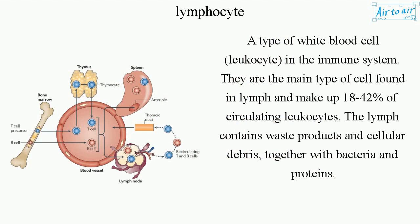They are the main type of cell found in lymph and make up 18-42% of circulating leukocytes. The lymph contains waste products and cellular debris, together with bacteria and proteins.